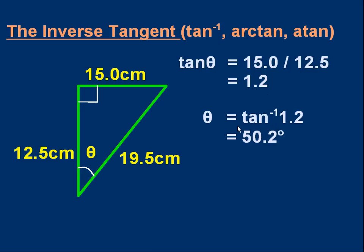Theta is tan minus 1, 1.2. Theta is the angle that has a tangent of 1.2. That's what it means. So you do tan minus 1, 1.2 on your calculator. And you should get 50.2 degrees.